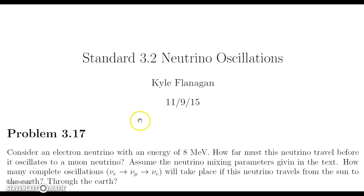So the problem considers an electron neutrino with an energy of 8 mega electron volts. How far must this neutrino travel before it oscillates to a muon neutrino? To do this, we'll assume the neutrino mixing parameters given in the text. And how many complete oscillations going to a muon neutrino and back will take place if this neutrino travels from the sun to the earth and through the earth?